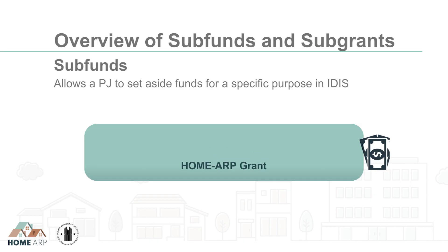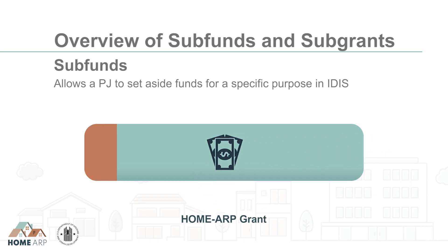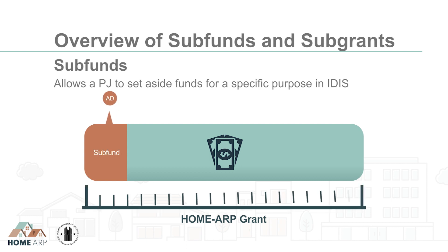A subfund is a way for the PJ to set aside funds for a specific purpose in IDIS. An example is the AD subfund, which allows the PJ to set aside funds for administrative and planning purposes. Subfunds are important because they help to enforce compliance with HomeARP spending limitations. For example, the AD subfund limits the PJ's spending on administration and planning to 15% of its HomeARP grant, as specified in the notice.